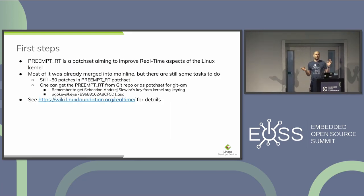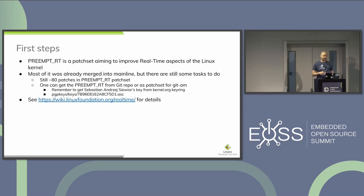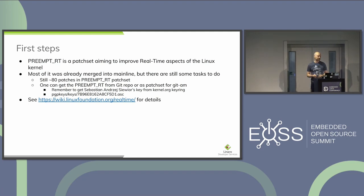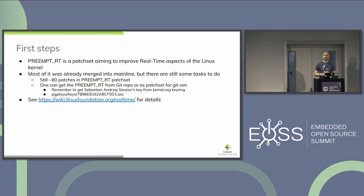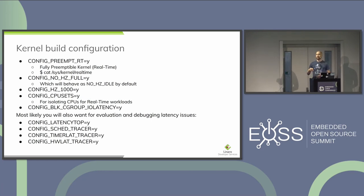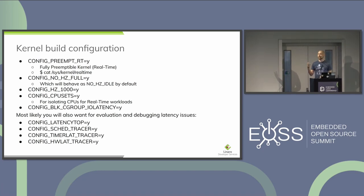The first steps are to get the PREEMPT_RT patch set. Luckily, most of it is already in mainline — at the 6.1 point there were 50 patches already merged, and with 6.3 there are 80 patches outside. Applying this is straightforward: grab the patches, check the signature, and apply. You need to configure the kernel with CONFIG_PREEMPT_RT. If you build such a fully preemptable kernel, you'll have a sysfs knob confirming the kernel is real-time.